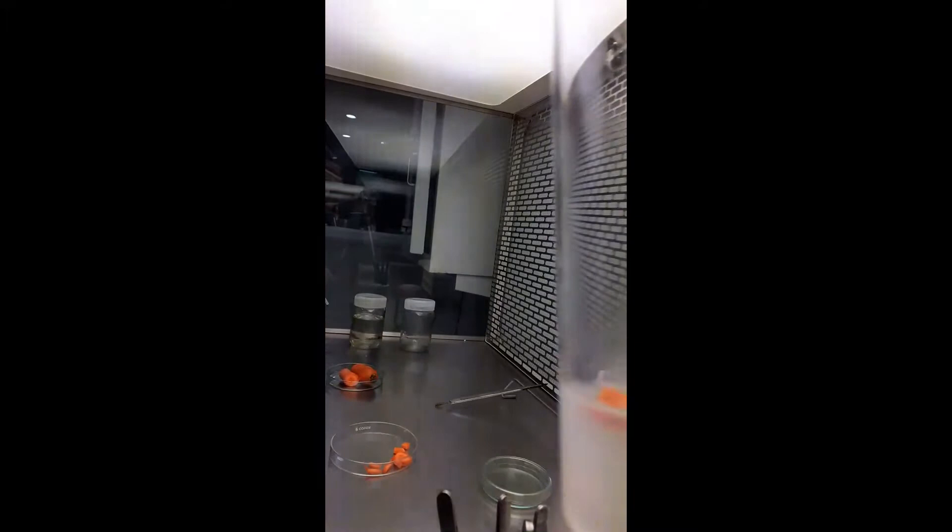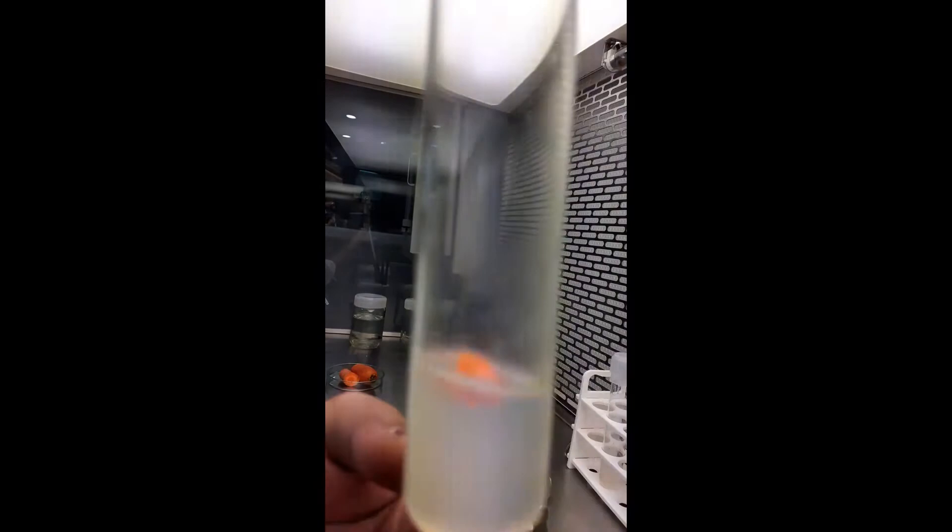It is half embedded within agar and half above. This is how you have to initiate the callus culture using a carrot explant.